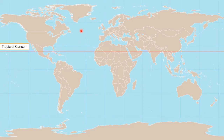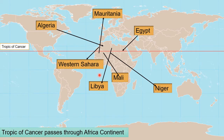Talking about the Africa continent, there are seven countries: Algeria, Mauritania, Egypt, Western Sahara, Libya, Mali and Niger.